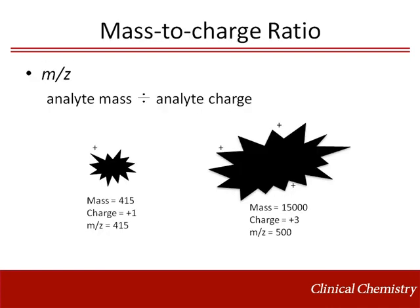Once we have a way to get ions charged and into the gas phase, the most important aspect in the analysis is the mass-to-charge ratio, designated as m/z. An analyte with a molecular weight of 415 and a charge of plus 1 will have a mass-to-charge ratio of 415. Likewise, a molecule with a molecular weight of 15,000 and a charge of plus 3 will have a mass-to-charge ratio of 5,000.